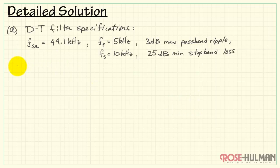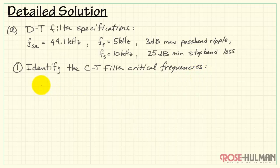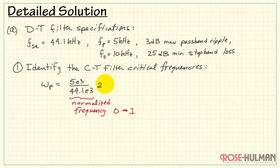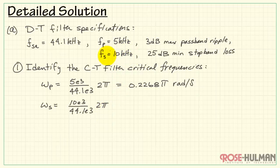Now we're ready for the detailed solution, which follows a three-step process. First, we identify the continuous-time filter critical frequencies. We normalize the passband frequency of 5 kHz against the sampling frequency of 44.1 kHz to get a value between 0 and 1, then scale by 2 pi to get the discrete-time frequency of 0.2268 pi radians per sample. Similarly, the stopband frequency works out to twice this value, or 0.4535 pi radians per sample.